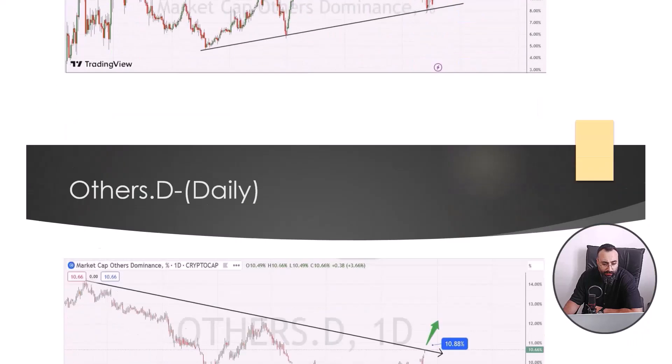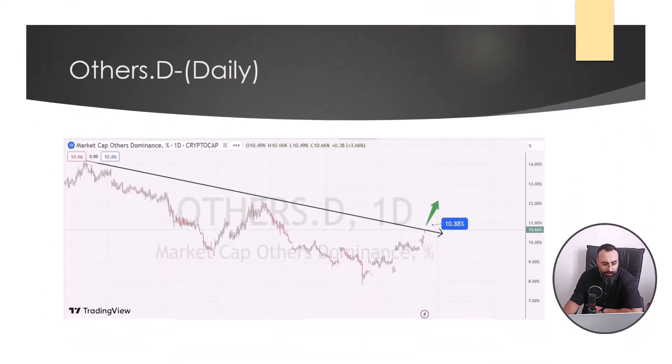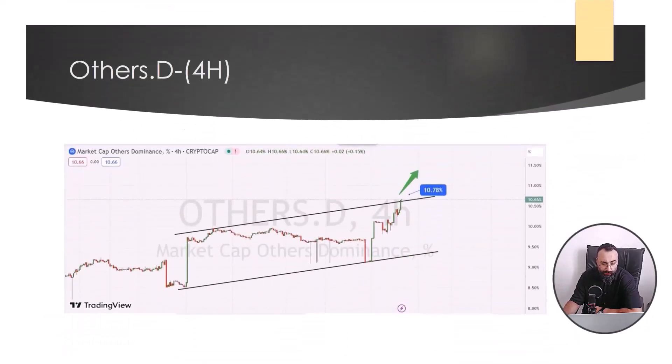And in the daily timeframe of Others dominance, looking at this timeframe, there is an expectation of growth in this symbol with the break of the downward trend in the range of 10.88%.